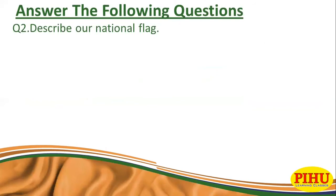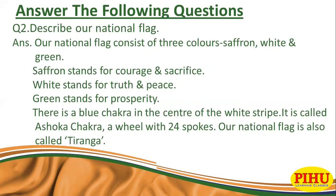Question number 2: Describe our national flag. Answer: Our national flag consists of three colours — Saffron, White, and Green. Saffron stands for courage and sacrifice. White stands for truth and peace. Green stands for prosperity. There is a blue chakra in the centre of the white stripe. It is called Ashok Chakra, a wheel with 24 spokes. Our national flag is also called Tiranga.